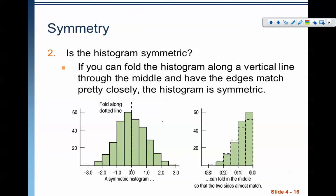Symmetry now is, is the histogram symmetrical? Can you fold the histogram along a vertical line through the middle and have the edges match pretty closely? This histogram below is, we would call this symmetric. We draw the line right here, and we fold this over. And again, notice that it isn't perfect, but there's wiggle room here. This is basically the same. It's not perfect, but it's basically the same when we fold it in half, so we would call that symmetric.